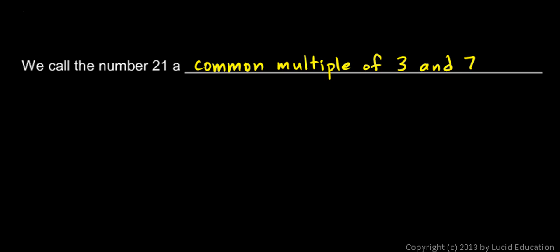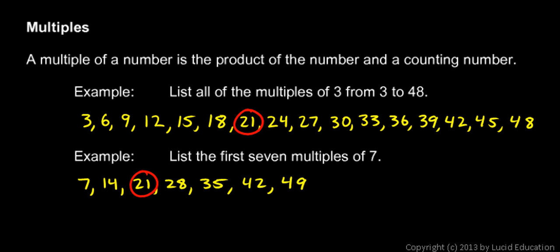7, because 3 has 21 as a multiple and 7 also has 21 as a multiple. So 21 is a common multiple of 3 and 7. Now look at the list, the number 42 also shows up in both lists. 42 is also a common multiple of 3 and 7.